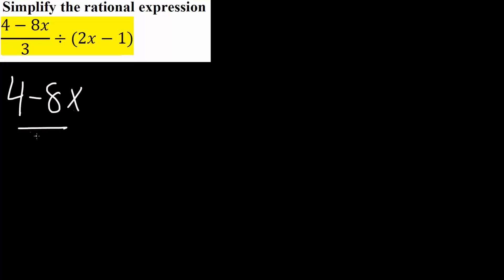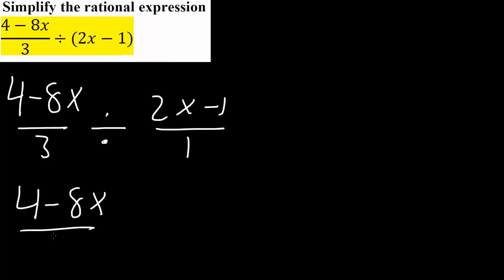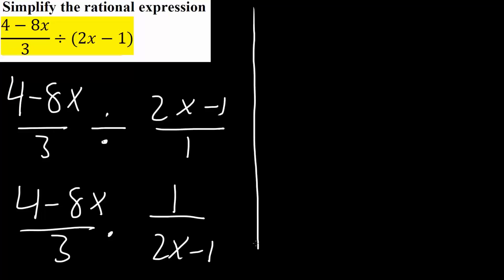Now we'll do the second problem. It's still very much similar. What we have is 4 minus 8x divided by 3, everything divided by 2x minus 1 divided by 1. Instead of dividing, what we typically want to do is multiply. So we would get 4 minus 8x divided by 3, times — we flip it — 1 divided by 2x minus 1. The next step is to try to factor this term to see if we can cancel.